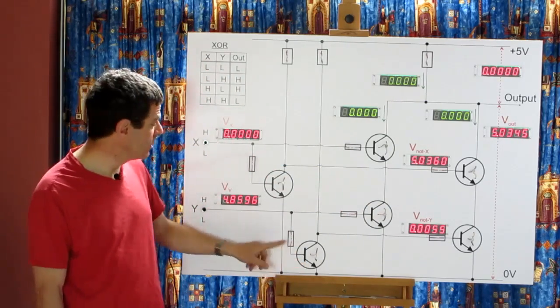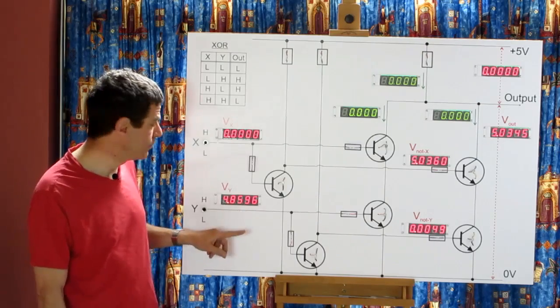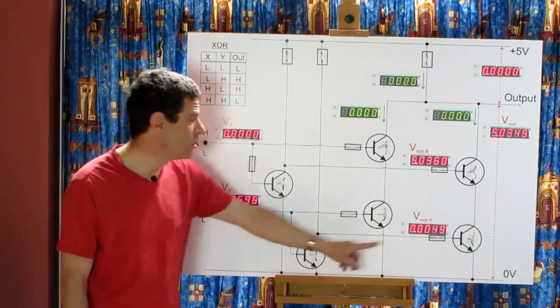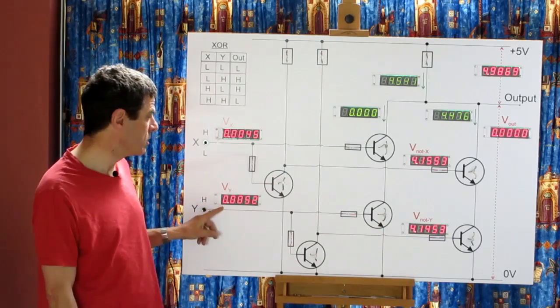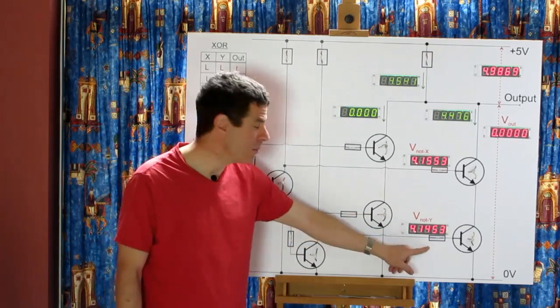This transistor is inverting the Y input. So when Y is high, not Y is low. And when Y is low, not Y is high.